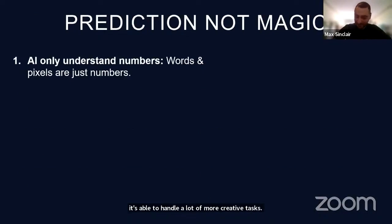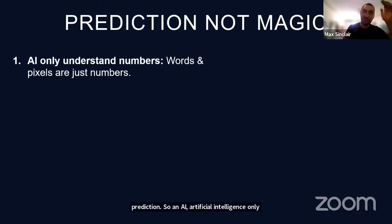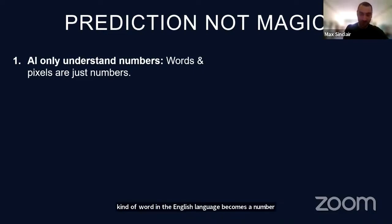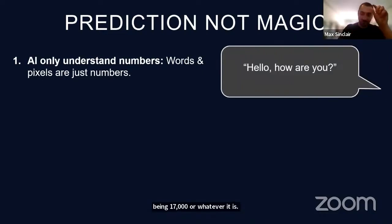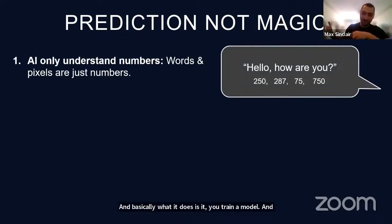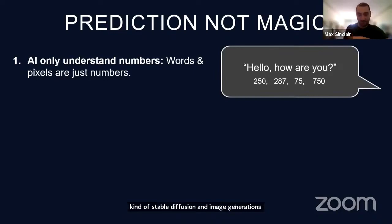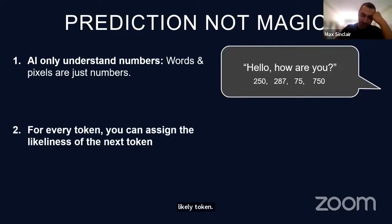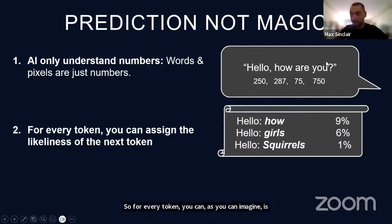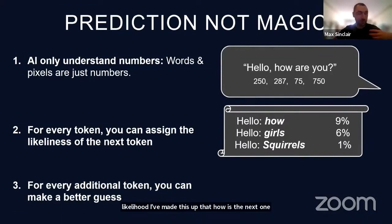The way it works is not by magic but by prediction. AI only understands numbers — so in ChatGPT, every word in the English language becomes a number, with 'a' being 1 and 'xylophone' being 17,000 or whatever it is. You train a model and it's predicting: with this sequence of numbers, what is the most likely next token? This is the same with Stable Diffusion and image generation — it's looking at pixels, which are just numbers, and trying to guess the most likely next token.